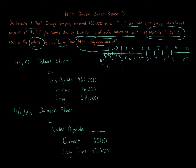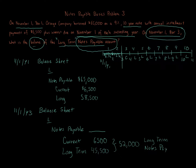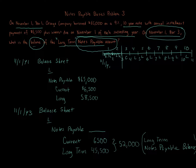The total balance in the long-term notes payable account combines both the current and long-term portions: $6,500 plus $45,500 equals $52,000. That is the long-term notes payable balance. If the question asked for the long-term portion only, it would be $45,500, and the current portion is $6,500. This shows how important it is to read the question carefully and pay attention to the exact language used.